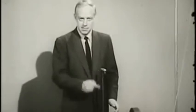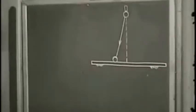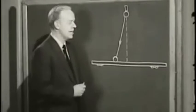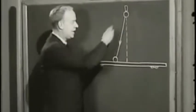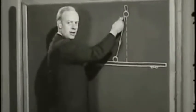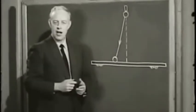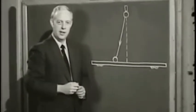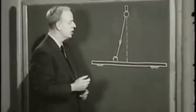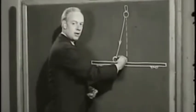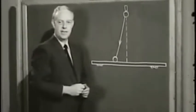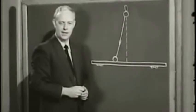Now suppose you were in this accelerated frame of reference. How could you explain this motion? Gravity is the only force acting on this ball, so it should fall straight down. But if the law of inertia is to hold, there must be a force pushing sideways on the ball in this direction to cause it to deviate from the vertical path.